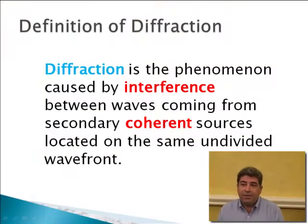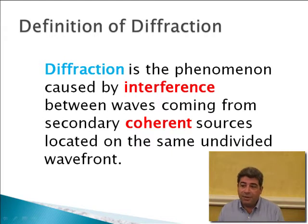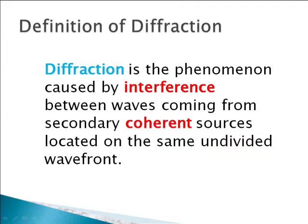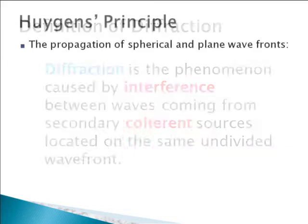Let's begin with the definition. The diffraction phenomenon is caused by interference between waves coming from secondary coherent sources located on the same undivided wavefront. This is quite a mouthful, so let's go and analyze it piece by piece.